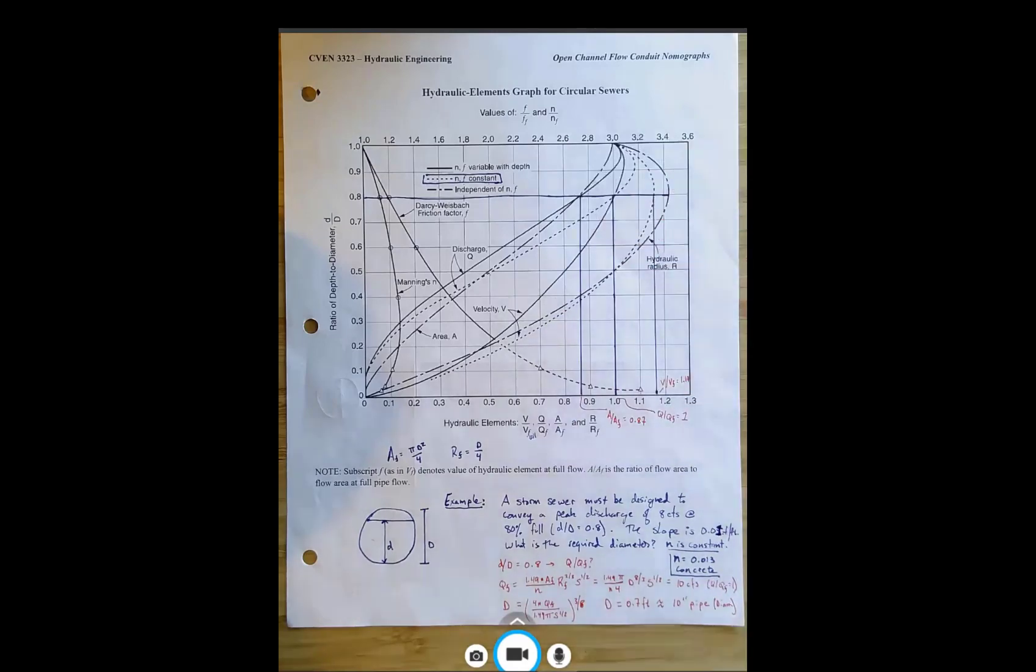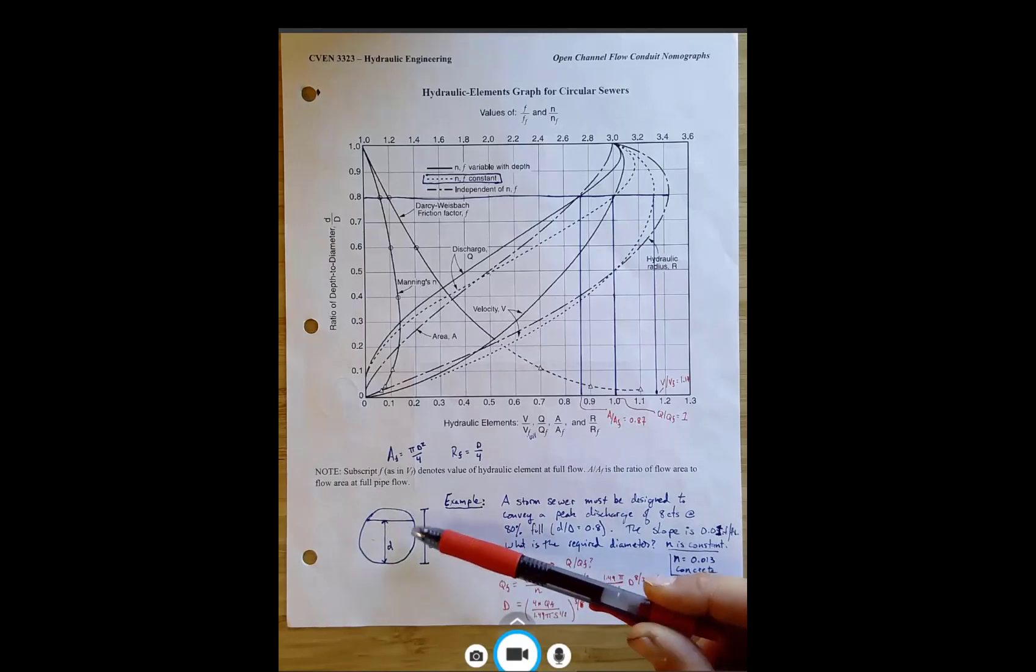And essentially the kind of problems you're interested in is you say, okay, maybe I know a relative depth that I need to design to. In this case, we'll say the relative depth is 80%. So the depth relative to the diameter is small d, or depth over diameter is 0.8.